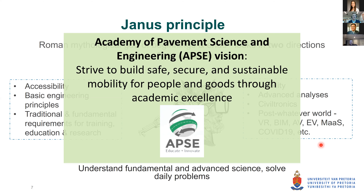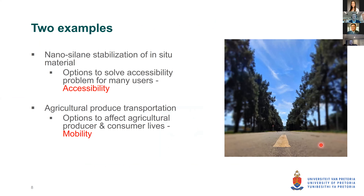I'll cover two technical examples demonstrating this accessibility-mobility issue. The first is nano-silane stabilization of in-situ materials — more about accessibility, solving connectivity problems for users by linking point A to point B using nanotechnology, a relatively modern high-tech approach. The second example is one of my pet research topics: agricultural produce transportation — looking at how road conditions affect the farmer and the consumer, the 7.8 billion people. That one is more about mobility — making the system work better.